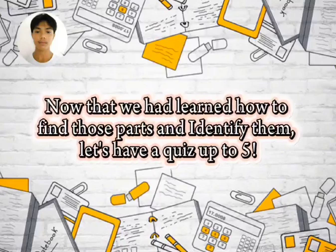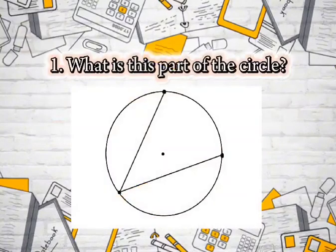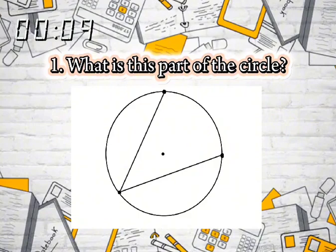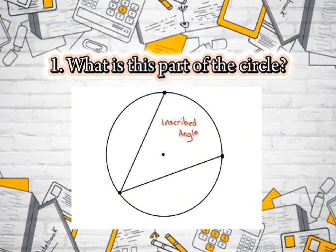Now that we have learned how to find the parts and identify them, let's have a quiz after five. Number one. What is this part of the circle? It's called the inscribed angle.